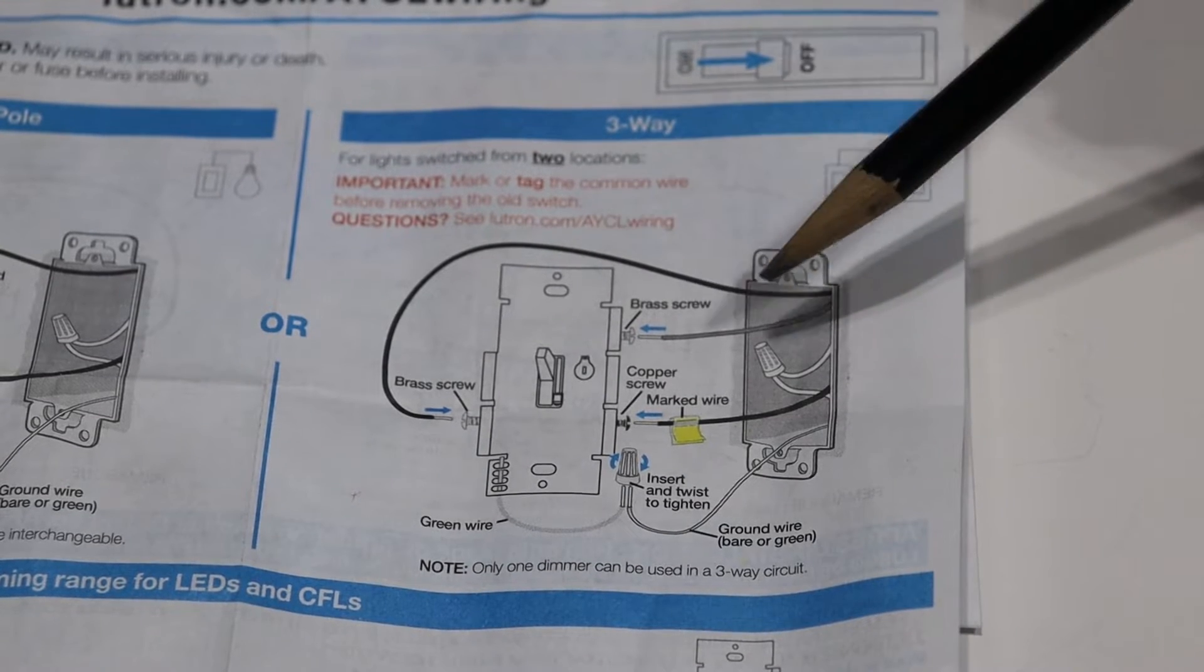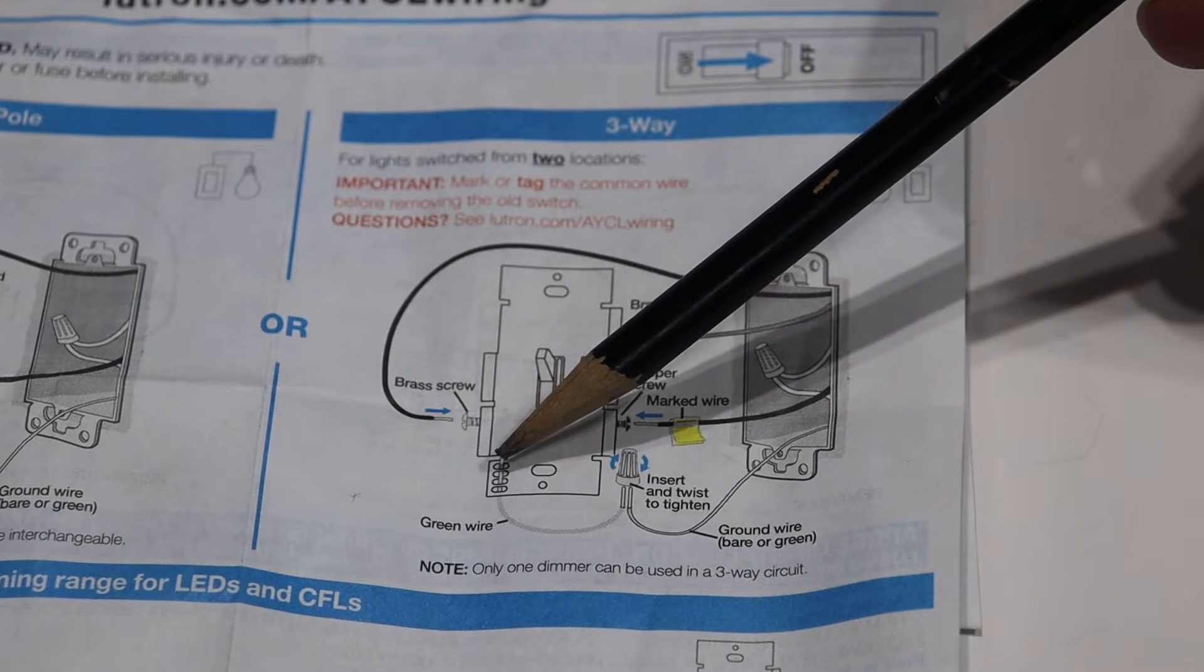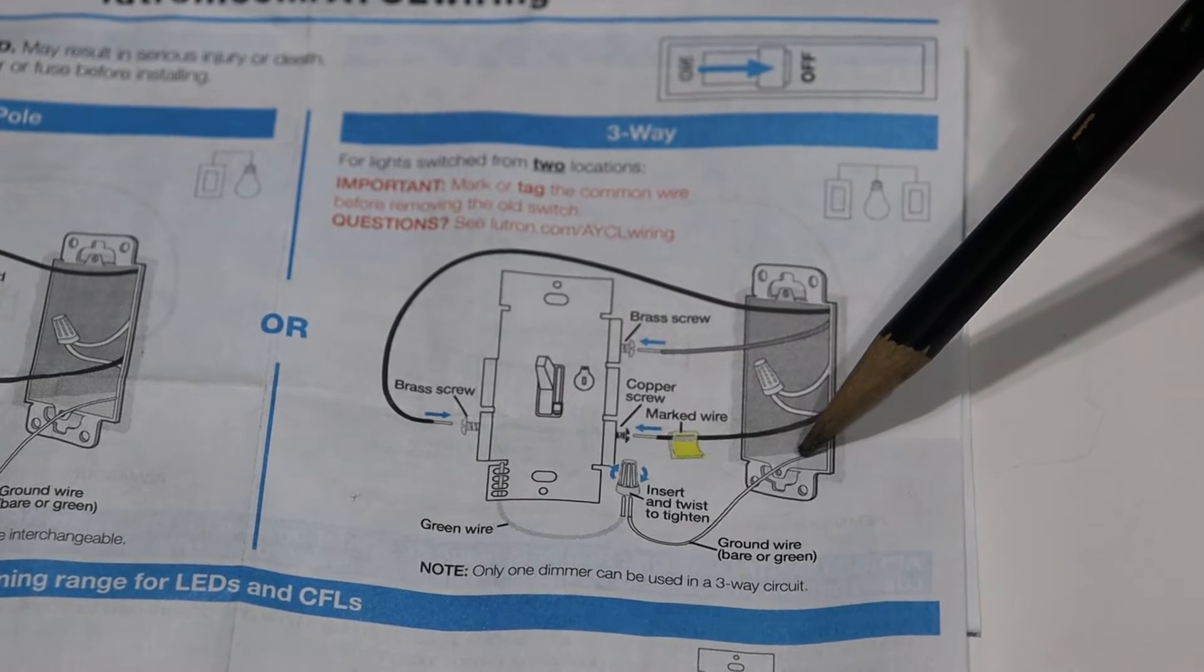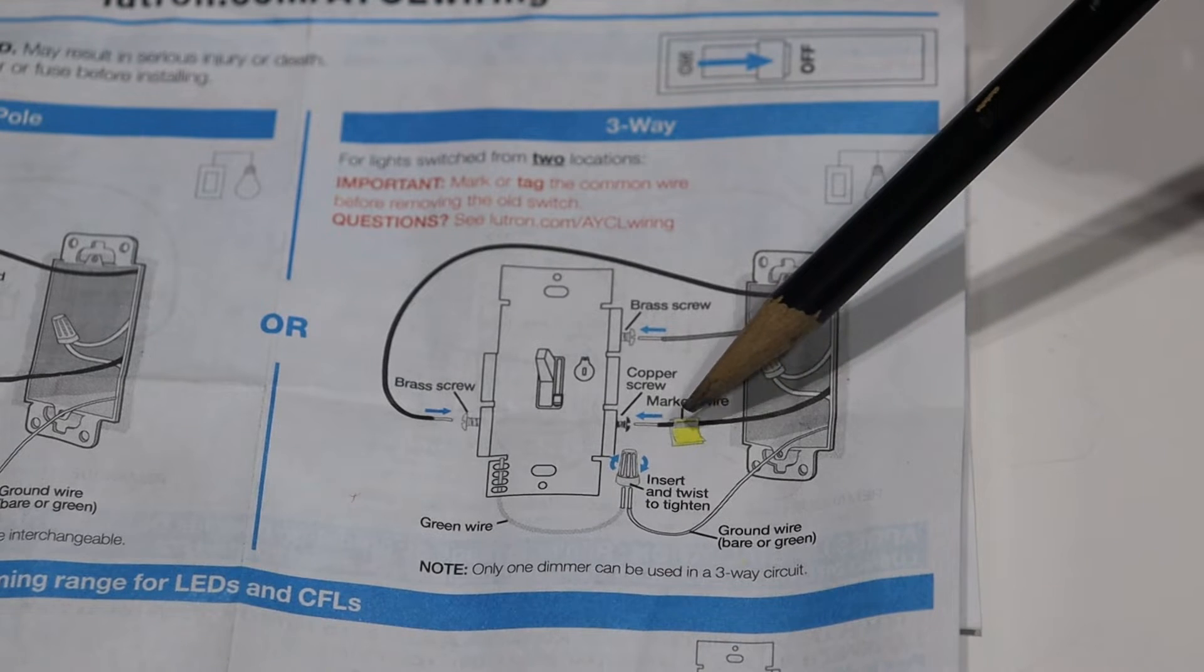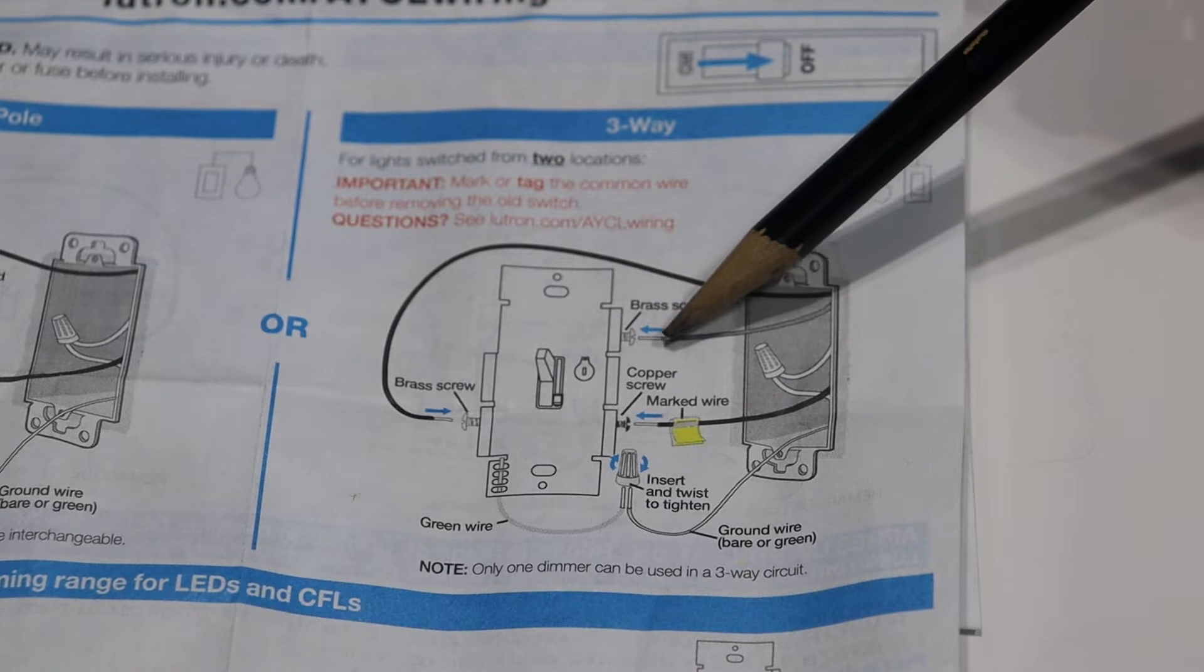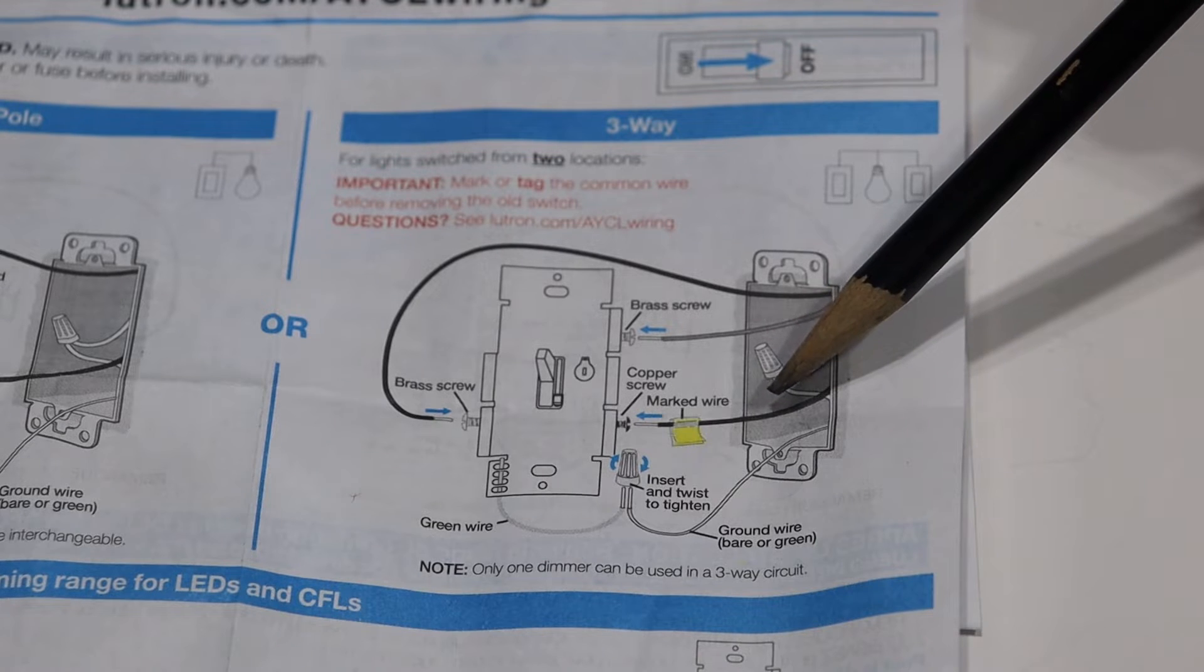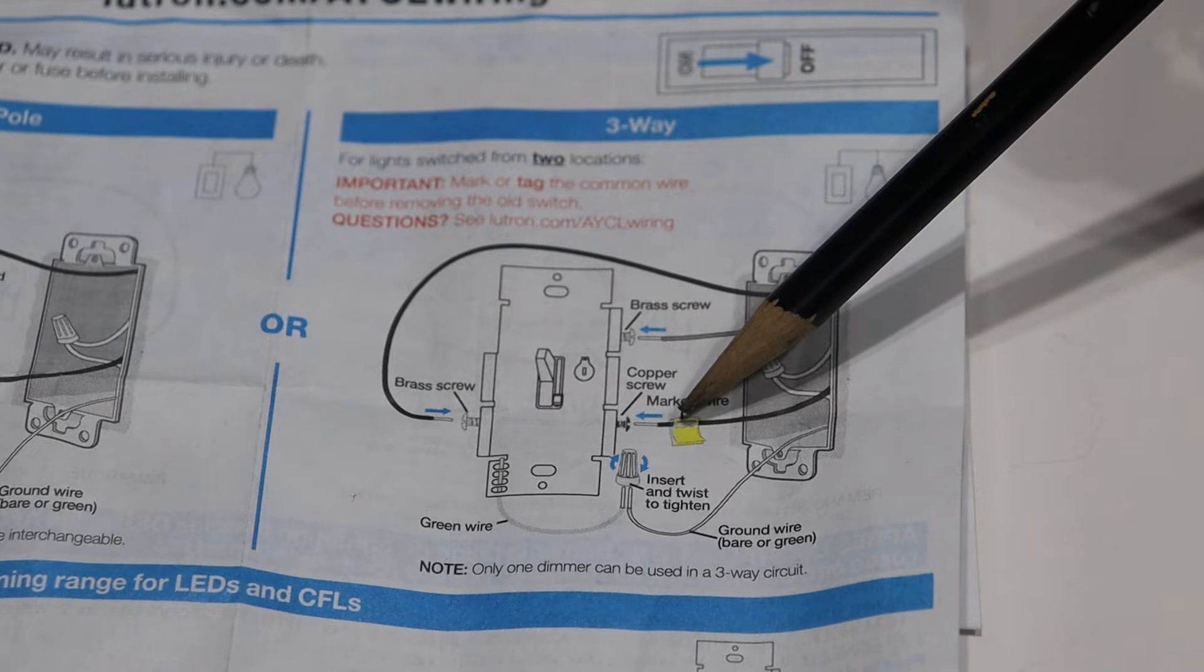But a couple things that you already know, you already know that the white neutrals can all be wired together. So you can get those out of the way. You already know that the pigtail, the ground wire, can be wire nutted together to your ground wire in the box. So now on a three-way circuit, you have three wires to deal with. You have the hot wire coming in and you have the two travelers. So the one traveler is going to be a red wire and your other wire is going to be the black wire. And so what this diagram has done is showed you which one of the screws each wire goes to. This marked wire is the hot wire coming in and I'll show you how to identify the hot wire later.